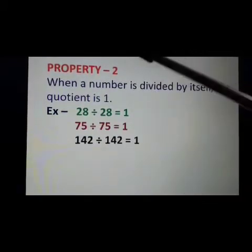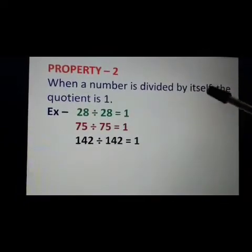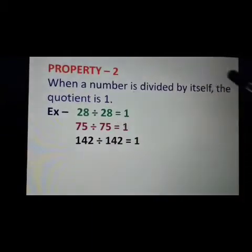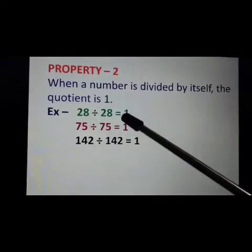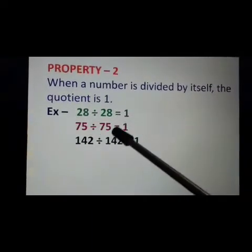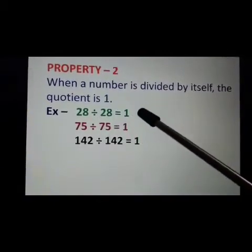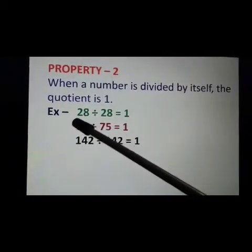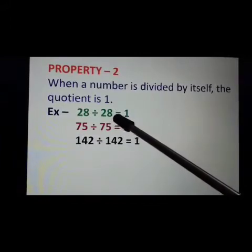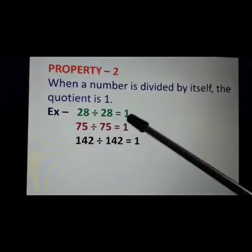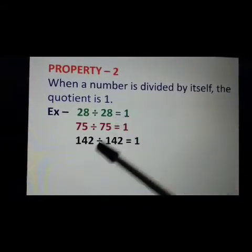Now the second property: when a number is divided by itself, the quotient is 1. For example, 28 divided by 28 is equal to 1. 75 divided by 75 is equal to 1.